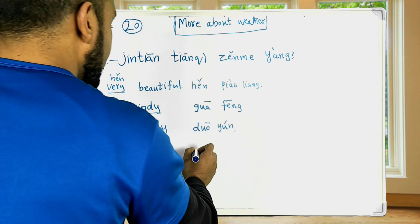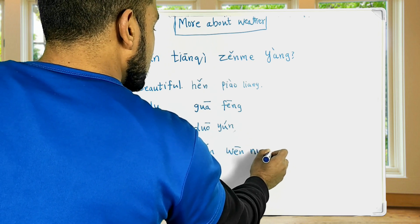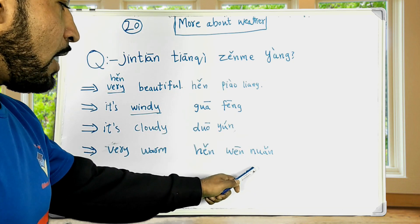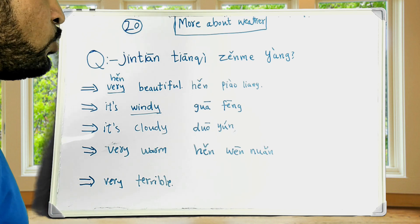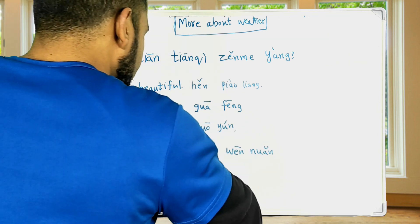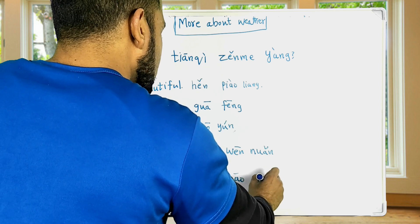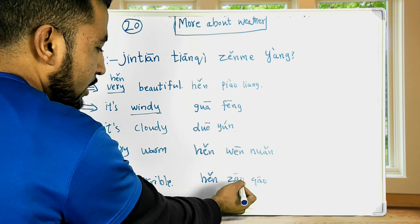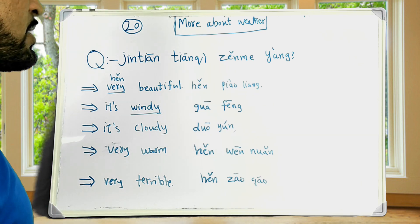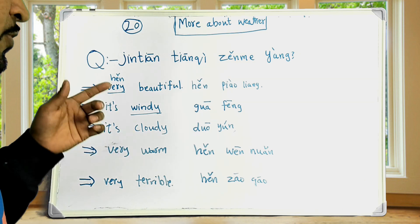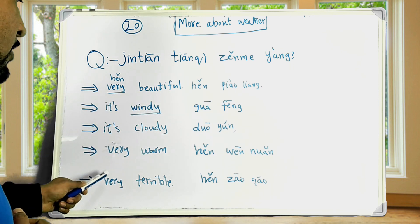Very warm — 很温暖. How's the weather today? Very warm. How's the weather today? Very terrible — 很糟糕. So these are the five different short-form answers: very beautiful, it's windy, it's cloudy, very warm, or very terrible.